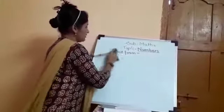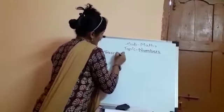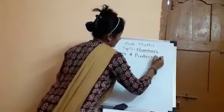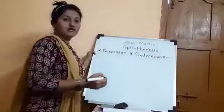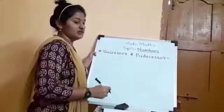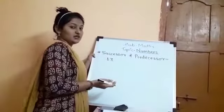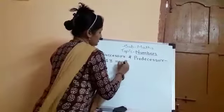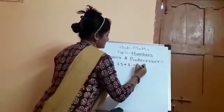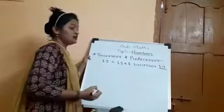The next concept in this topic is Successor and Predecessor. Successor and Predecessor is like the concept you learned in 2nd Standard — the number before the given number and the number after the given number. For example, the number that comes after 13 is 14, so 13 + 1 = 14. The successor of 13 is 14.